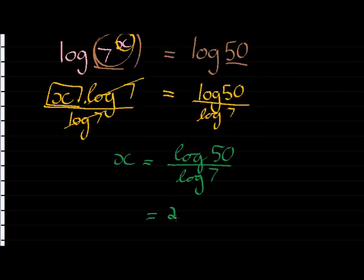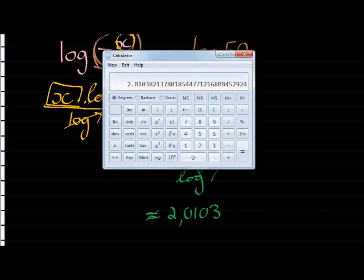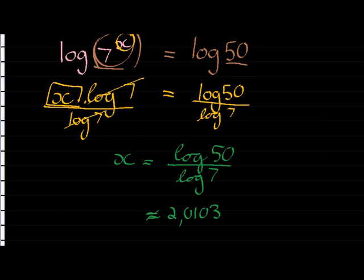So 2.0103, and we've rounded it off so let's just use curly equal signs. They're quite ugly, but my curly equal signs since we've rounded it off. Did I round it off correctly? Oh, 01038, so it's actually 0104.